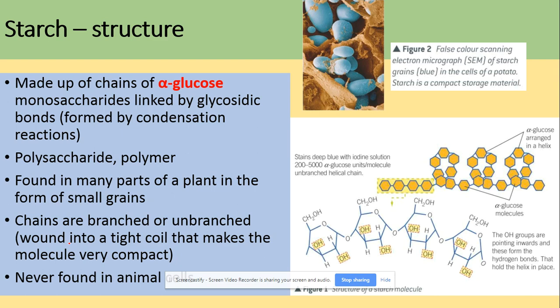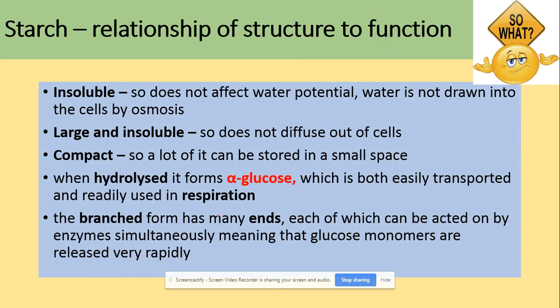Where can you find starch? You can find it in plants in the form of small grains, and chains could be branched or unbranched. They wind into a tight coil that makes the molecule very compact. It's a really important characteristic — it's compact and it's not going to be found in animal cells. In terms of starch, you need to be able to look at the relationship between it and its structure.